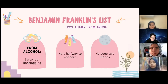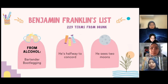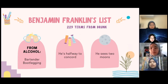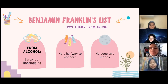Wide selling of alcohol also created words like bartender and bootlegging. From Benjamin Franklin's list, there are 229 terms about being drunk, as people loved to create new words while intoxicated, such as he is halfway to Concord and also he sees two moons. That's all about the origin of American English and the word formation.